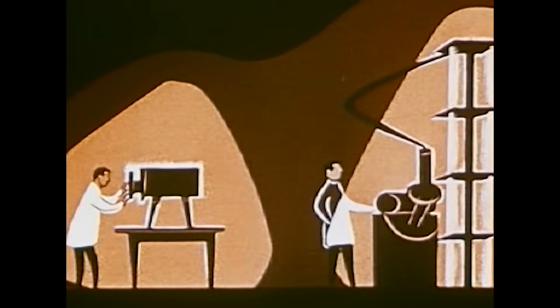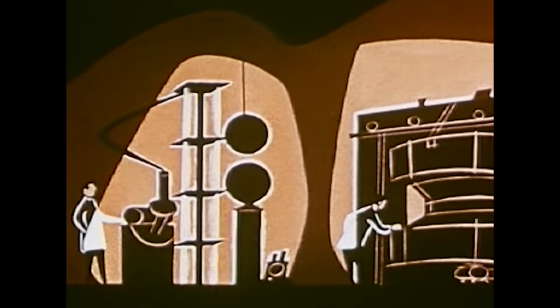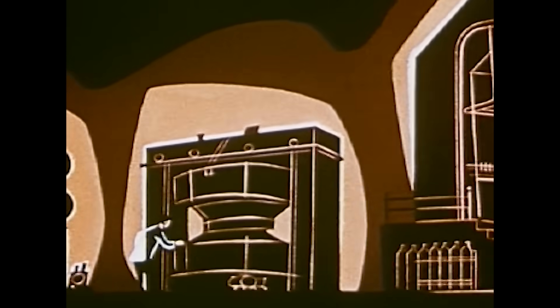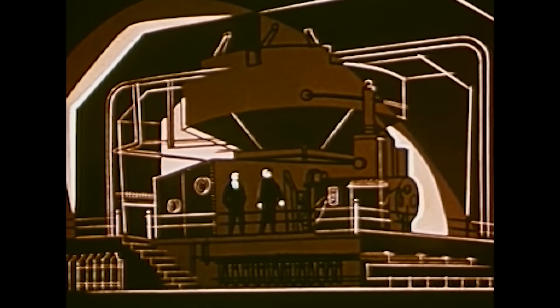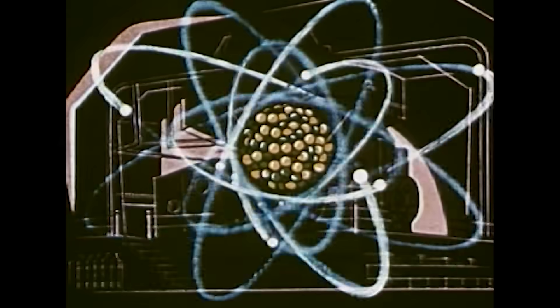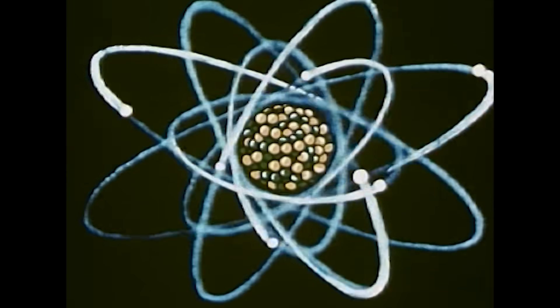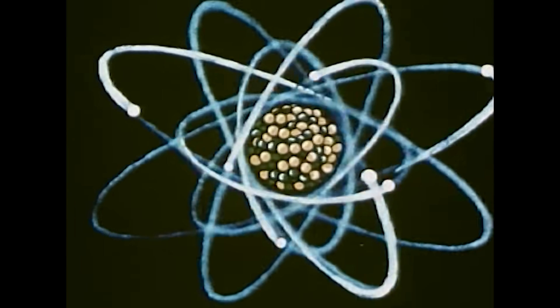Kuhn was interested in how scientists approach their daily work, and in thinking about how science develops over time. He saw science progressing in two alternating phases: one called normal and the other called extraordinary or revolutionary. Scientific development is traditionally thought of as simply moving faster when a discovery is made — like the discovery of bacteria or the realisation that the earth revolves around the sun. But for Kuhn, the normal and extraordinary phases aren't just different speeds of discovery, but fundamentally different approaches to scientific work.